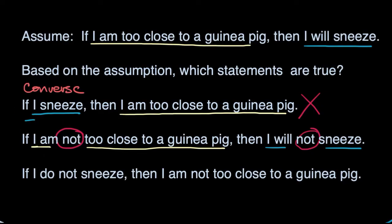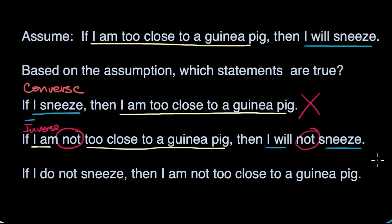But is this going to be true? Well, if I am not too close to a guinea pig, then I will not sneeze. Let's use the example of not being anywhere close to a guinea pig, but you inhaled pepper again — well, then you're going to sneeze, even though you are not too close to a guinea pig. So this is not true. Just because you are not too close to a guinea pig does not guarantee that you will not sneeze.